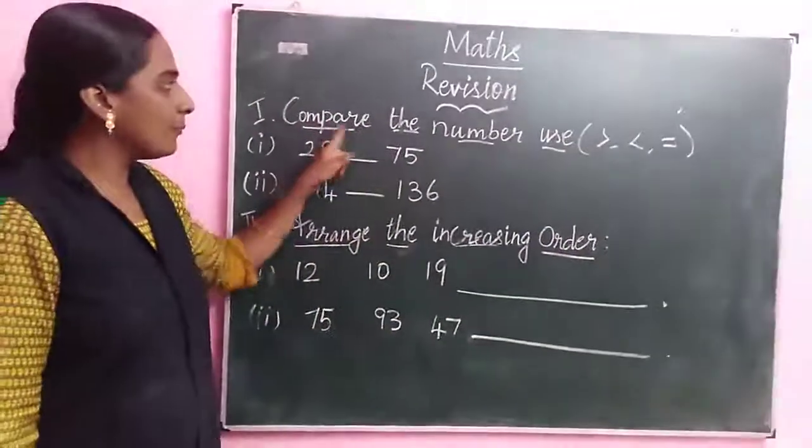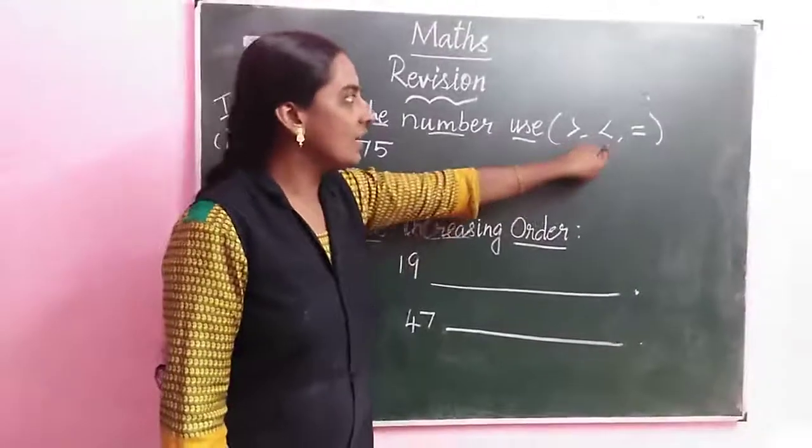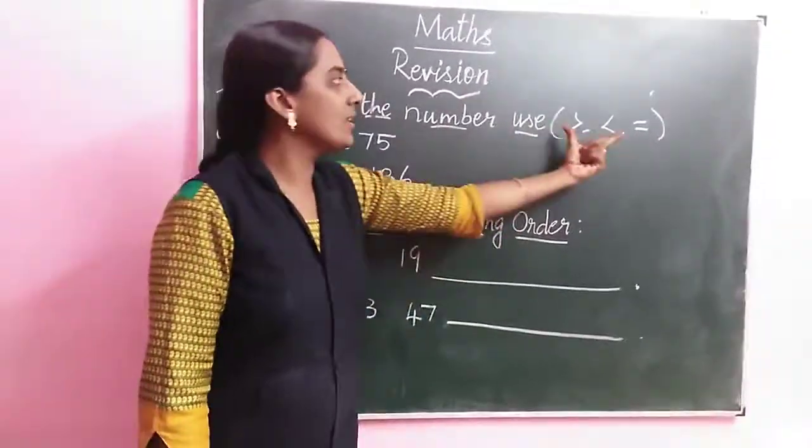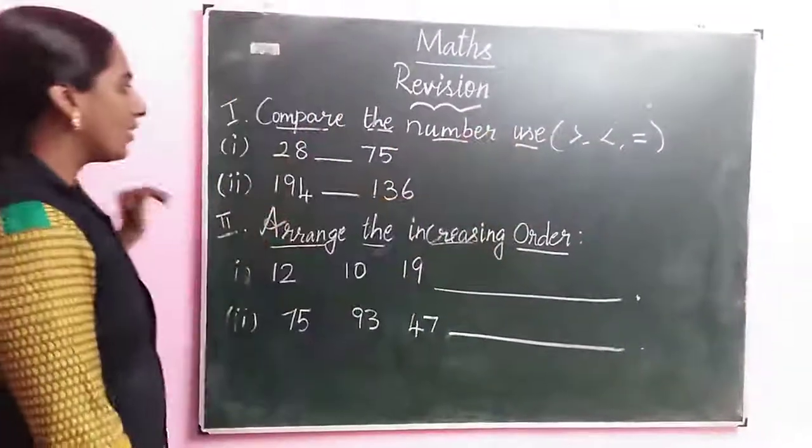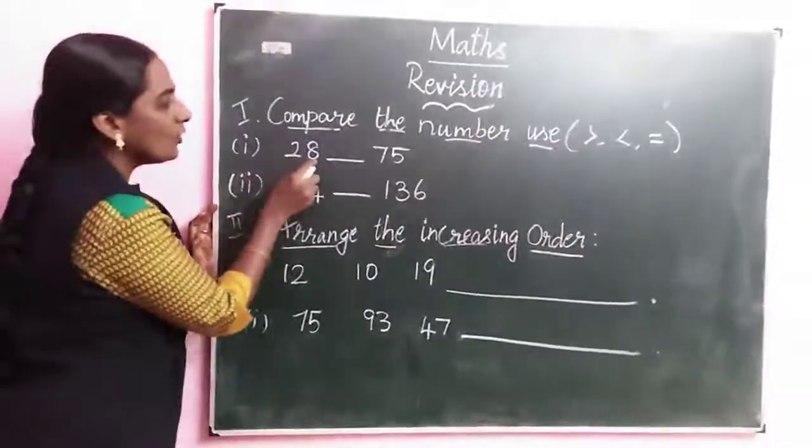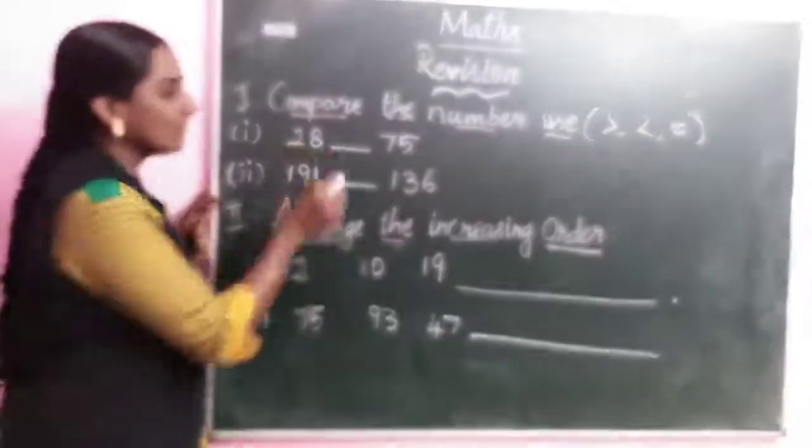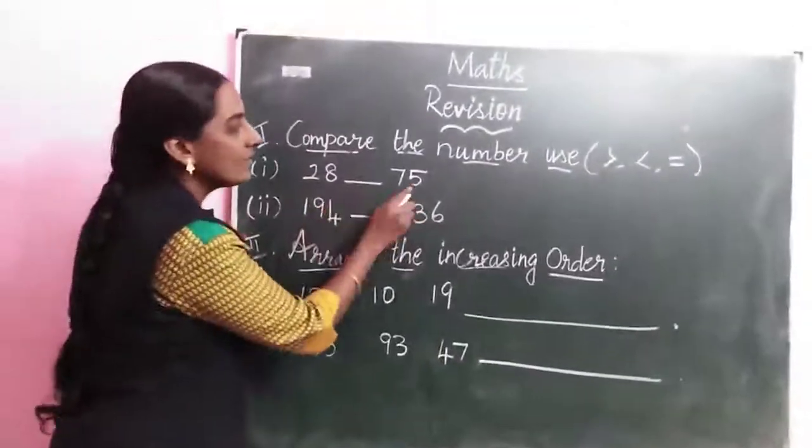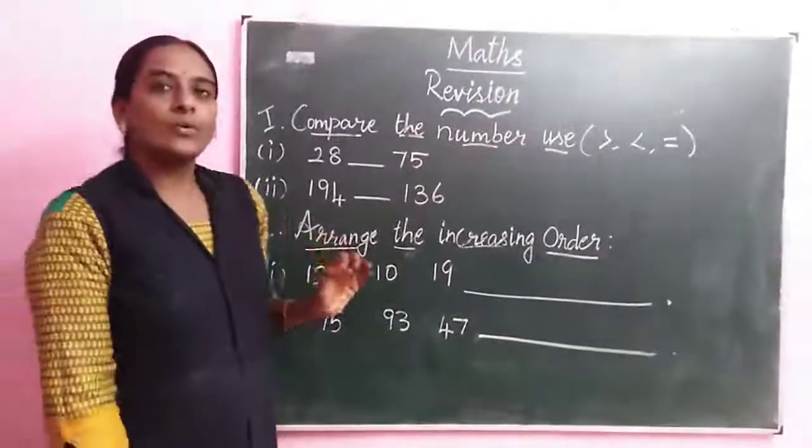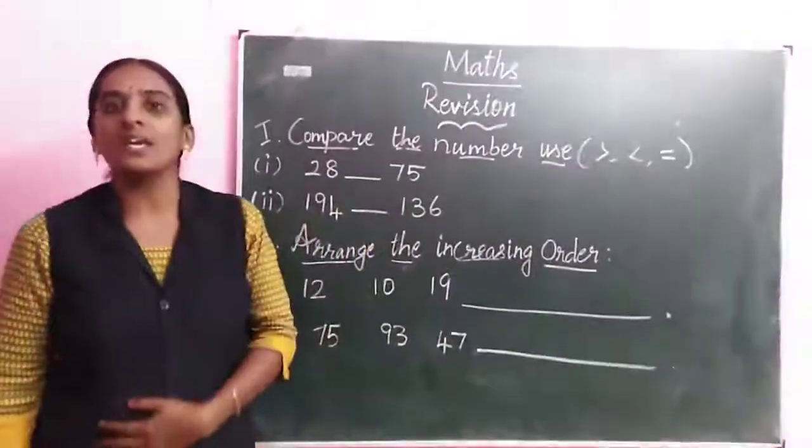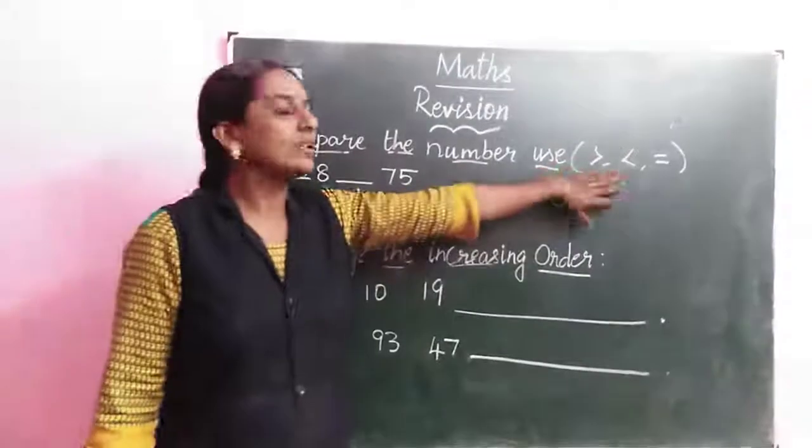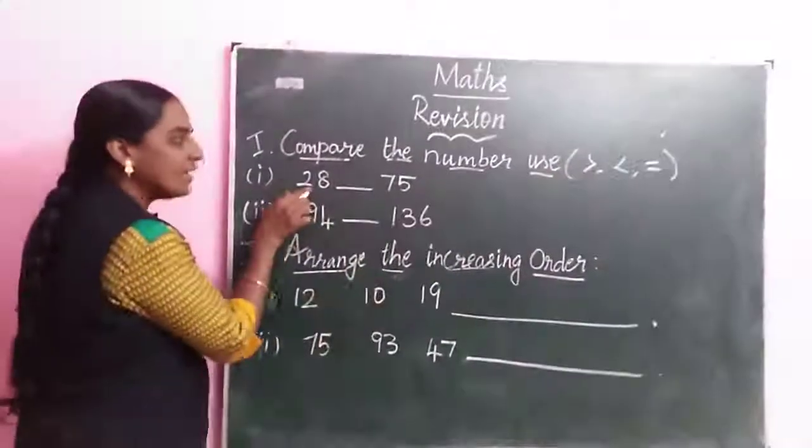Once again, compare the numbers using greater than, less than, equal. We are using these three symbols. First question: 28 dash 75. Now we are comparing numbers. Which is the biggest number? We want to use the symbols.